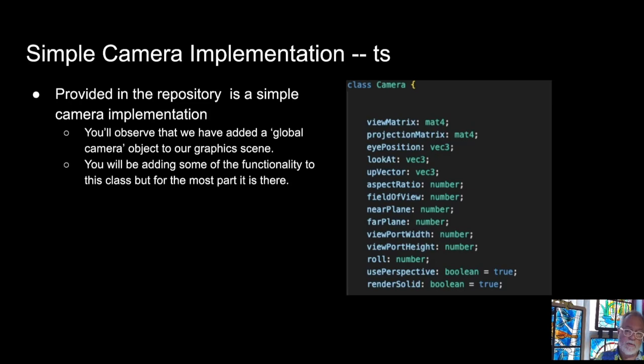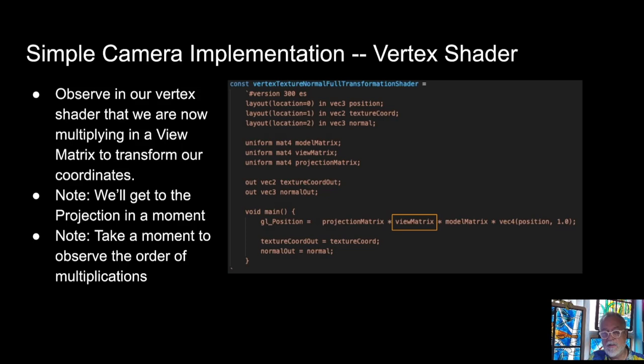And then you also have the viewport width and the viewport height, which are related to the aspect ratio. Then there's a role, which is currently unused, but you'll be implementing in your assignment. And then there's also a flag for use perspective projection or orthogonal projection. And then I've taken and added the render solid into that camera. So basically a lot of that stuff that was kind of all over the place in our initial implementation of this rendering framework is now going to be encapsulated in the camera. So we can have one camera per scene. And then I've also taken the transformations for the models and I've added it to the model library.